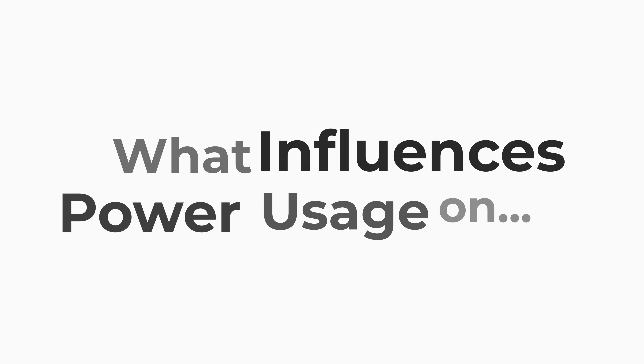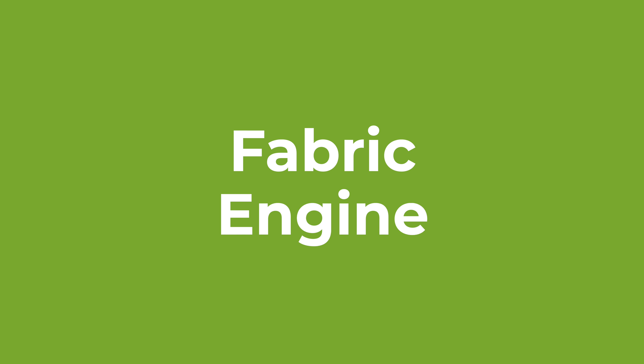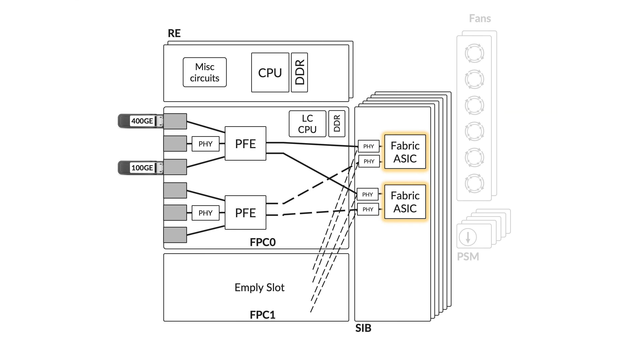Let's conclude with the Fabric ASIC and Fabric Serdes. Power usage is influenced by traffic — the amount of cells they need to switch — and by the number of PFEs they need to interconnect. If a chassis slot is empty or a PFE has been powered off, we want to shut down the service and connection to those elements and not consume energy for no reason.